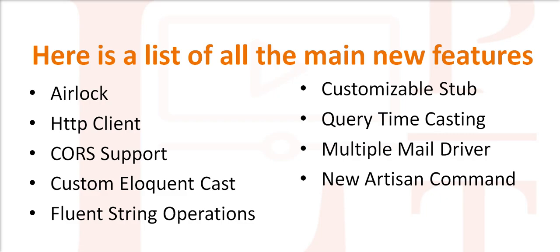The next one is customizable stubs. Artisan console make commands are used to create a variety of classes like controllers, migrations, and many more. All these classes are generated using stub files. In Laravel 7, you can customize all these stub files as per your requirement and generate controllers and migrations in your own format. It's a very cool feature.